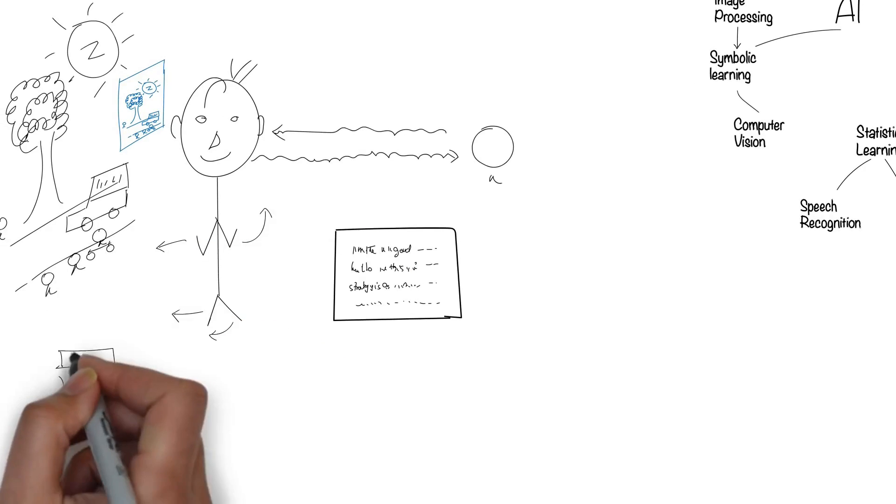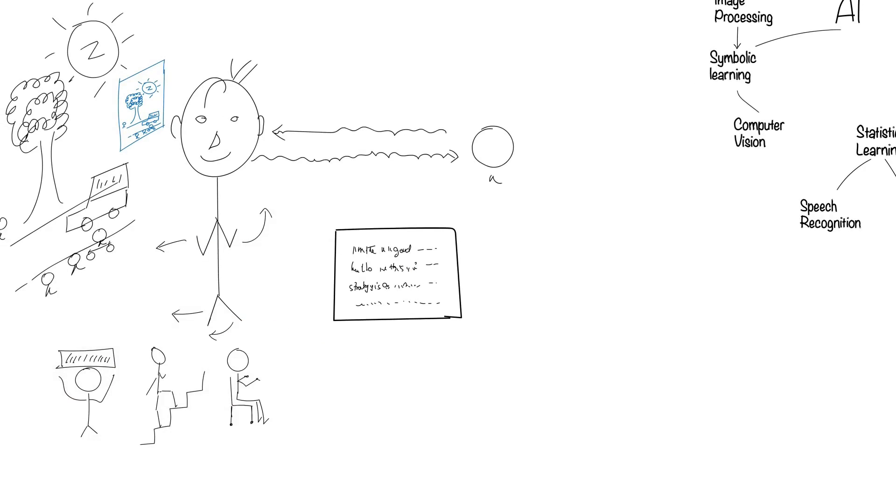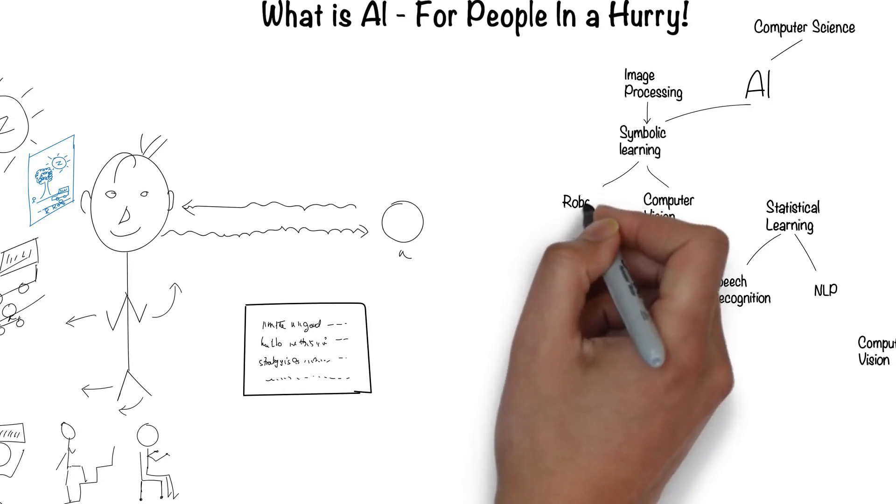Humans can understand their environment and move around fluidly. This is the field of robotics.